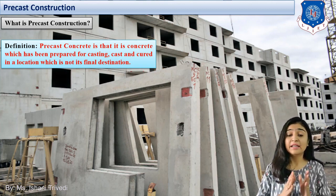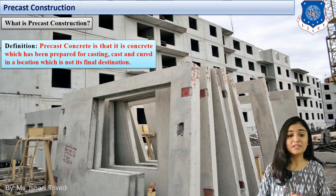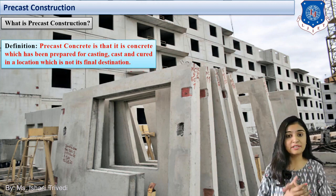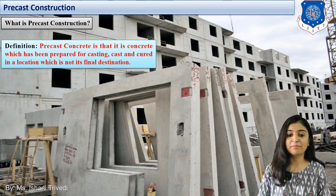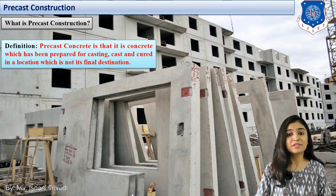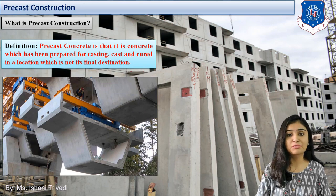Let us understand in technical terms what precast construction is. Precast concrete is concrete which has been prepared for casting — the member is already made and cured in a location which is not its final destination. Looking at the background images, these are examples of precast concrete members. We can see precast concrete walls with openings provided, which form the windows of the wall. This is how precast elements are available — directly brought to site for faster construction compared to cast-in-situ.